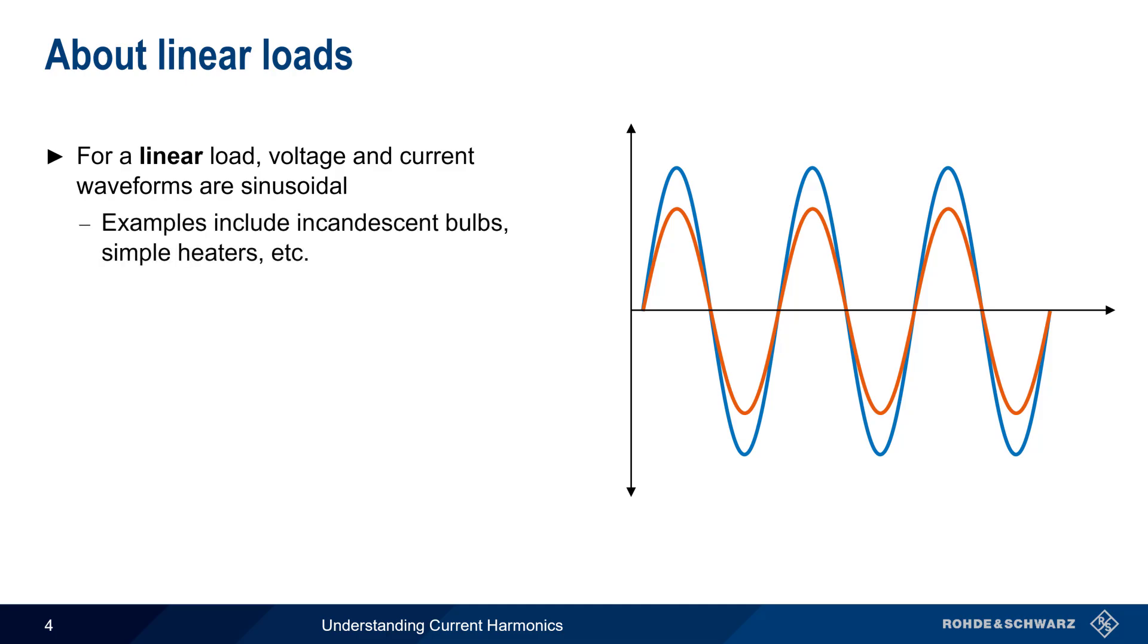Examples of linear loads are devices such as incandescent light bulbs, simple heaters, etc. In the case of a resistive linear load, the voltage and current will also be in phase, as shown here.